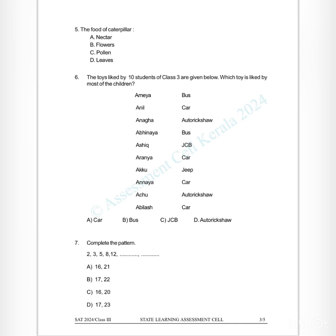Question 6: The toys liked by 10 students of Class 3 are given below. Which toy is liked by most of the children? The children and their preferred toys: Hashik — JCB, Aranya — car, Akku — jeep, Ananya — car, Achu — auto rickshaw, Abilash — car. Options: A) car, B) bus, C) JCB, D) auto rickshaw. Answer: Option A) car.